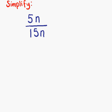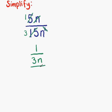Our next fraction to be simplified is 5n over 15n squared. On the top we have 5 times n, and on the bottom 15 times n times n. One of our n's on the bottom can cancel with the n on the top. That leaves us with the number part, which can be simplified also. 5 goes into both 5 and 15: 5 goes into 5 once, and 5 goes into 15 three times. That leaves us with 1 on the top and 3n on the bottom. So our final answer is 1 over 3n.